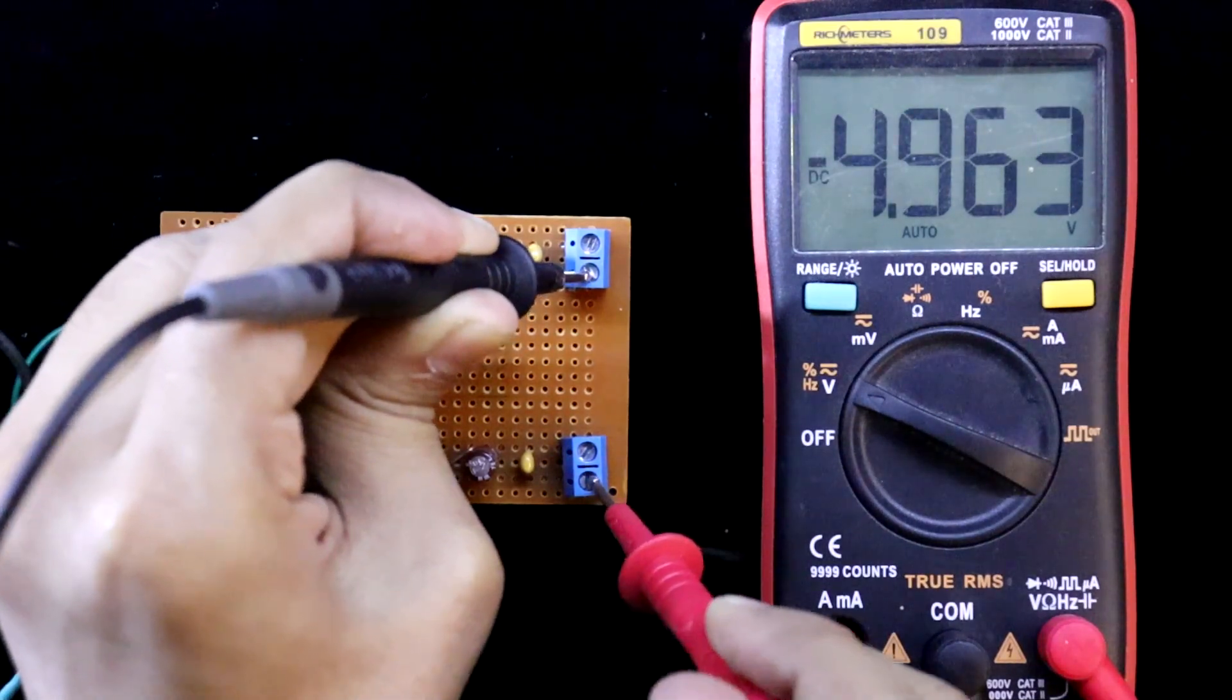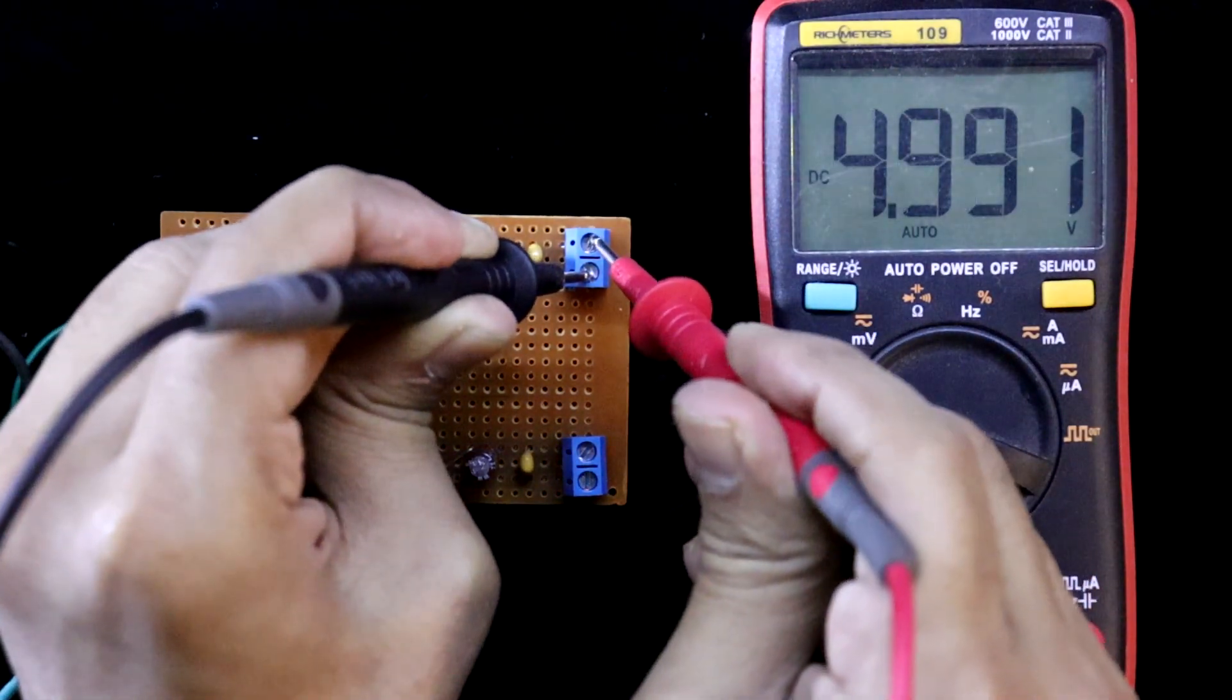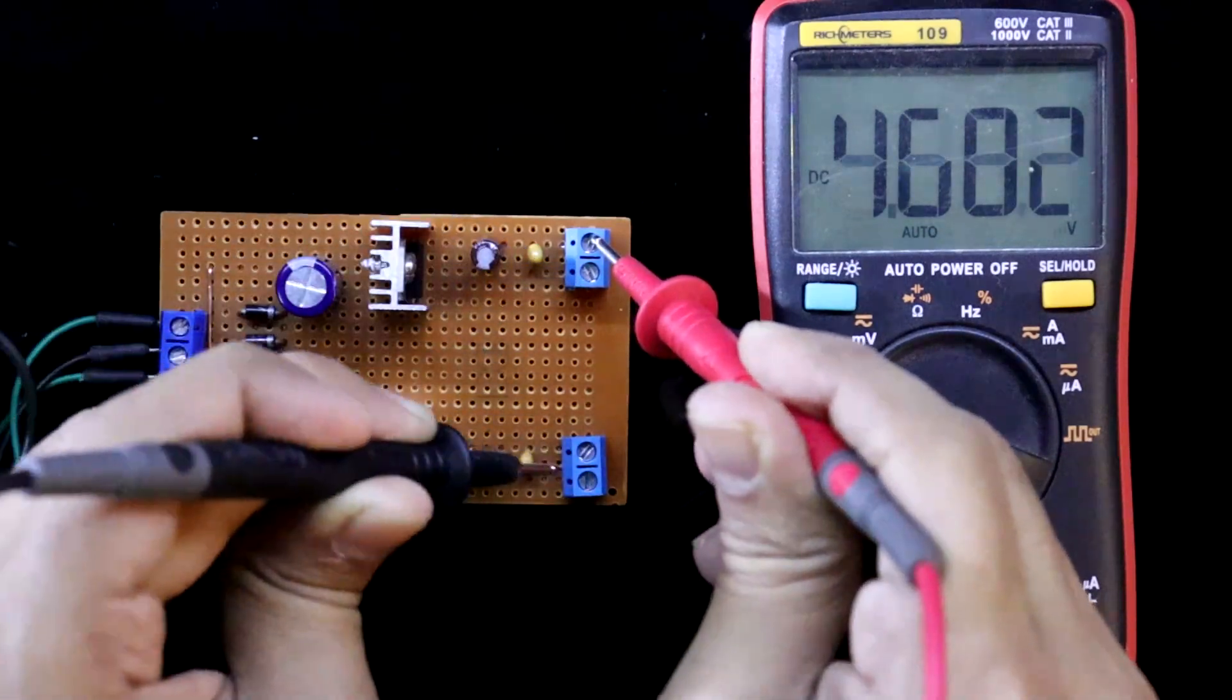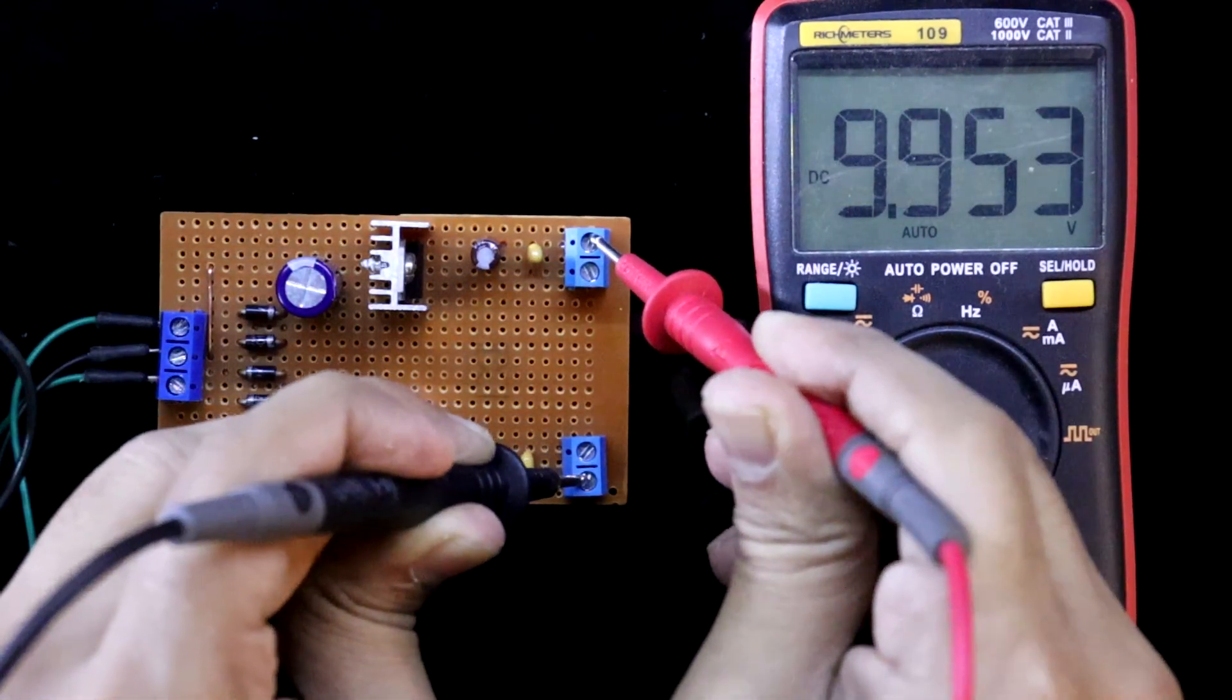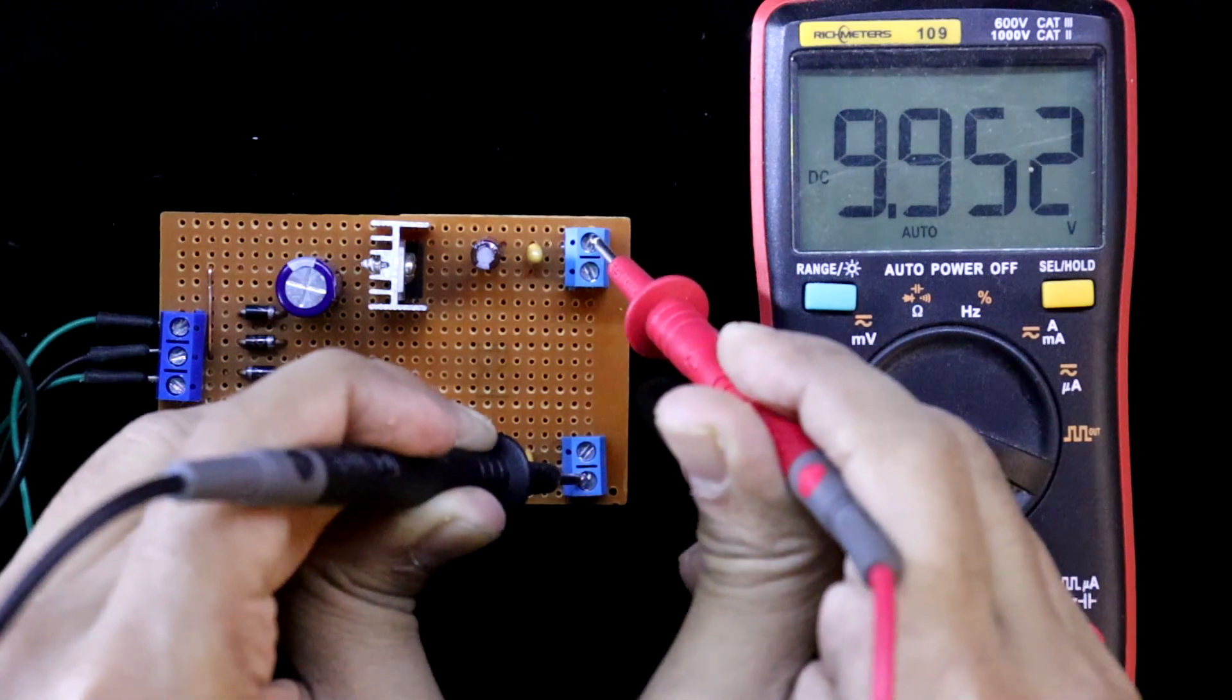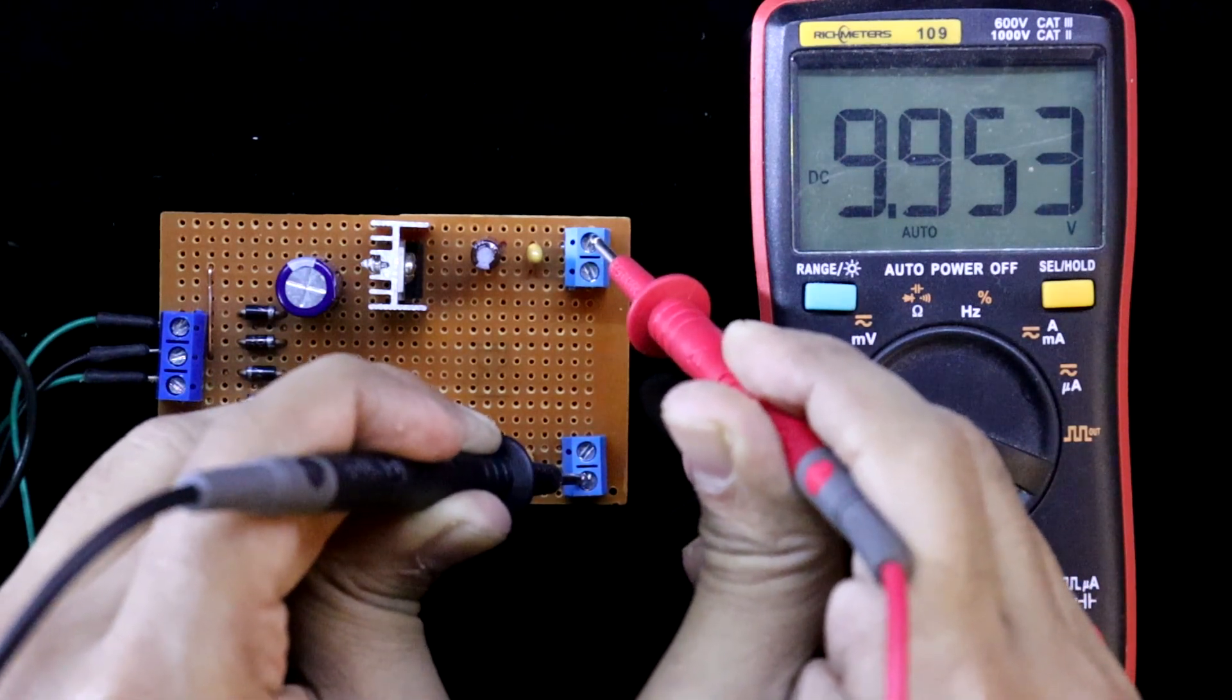It is minus 5 plus 5. And if I measure from here to here, it should be 10 volt. So we are getting this.